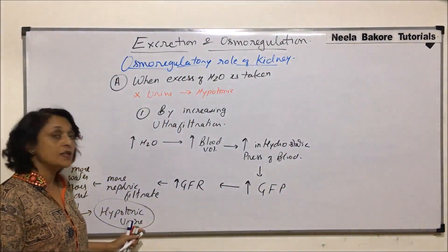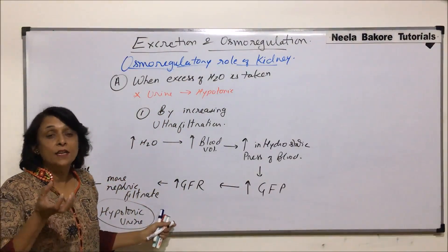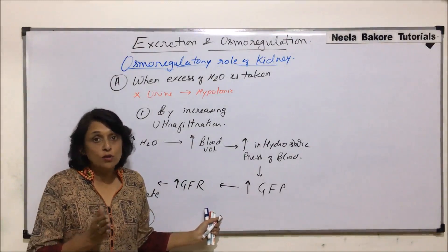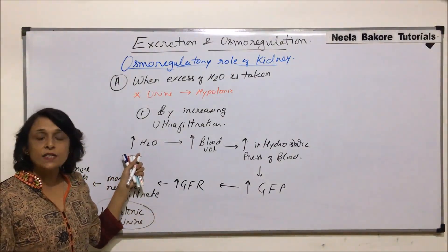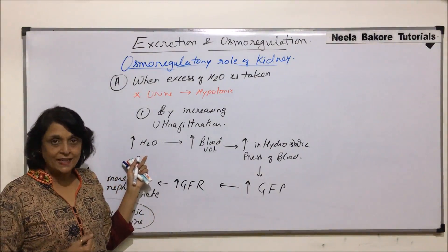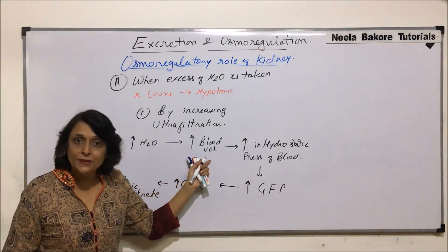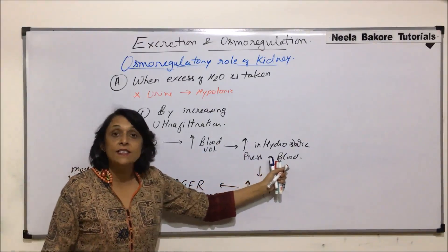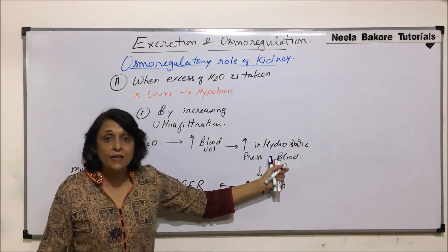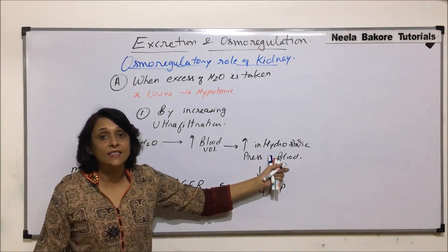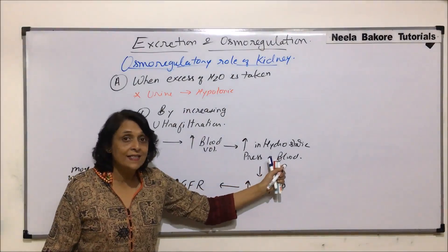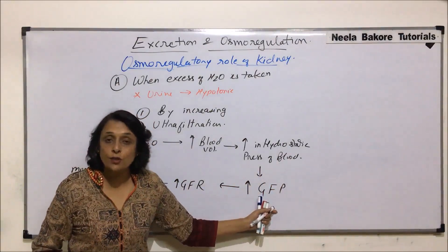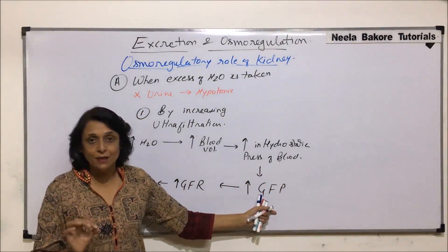The kidney has helped in maintaining osmolarity. If this extra water remains in the body, the body fluid becomes diluted because the solvent is increasing. In summary: excess water taken in → blood volume increases → hydrostatic pressure of blood in the afferent arteriole increases → glomerular filtration pressure increases beyond the normal 10 mmHg.